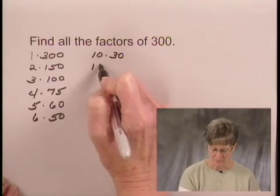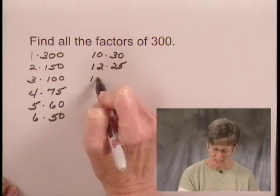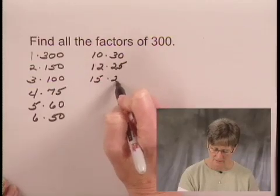12 times 25 is equal to 300. 15 times 20 is equal to 300.